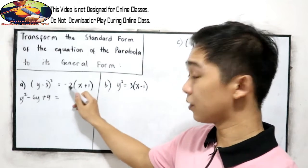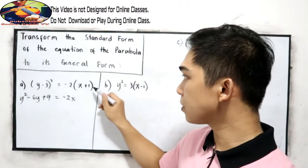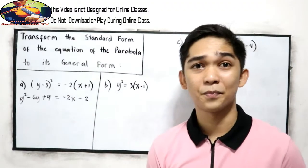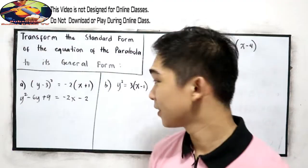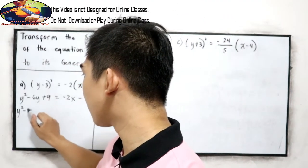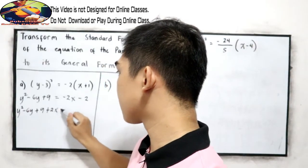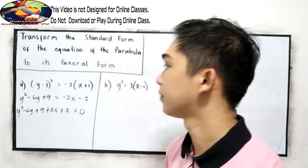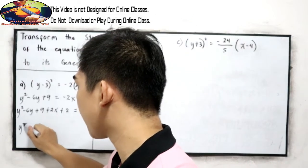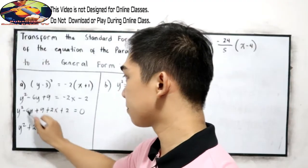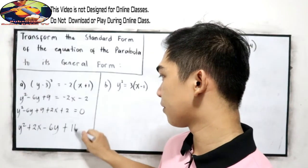On the right side, we distribute: negative 2 times x is negative 2x, and negative 2 times 2 is negative 4. Now equate to 0. So we have y squared minus 6y plus 9 plus 2x plus 4 equals 0. Rearranging: y squared plus 2x minus 6y, and 9 plus 2 is positive 11, is equal to 0.